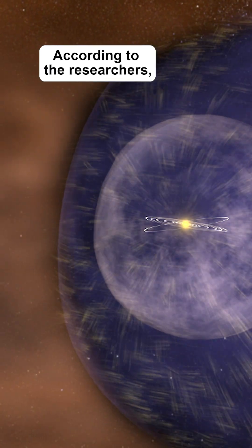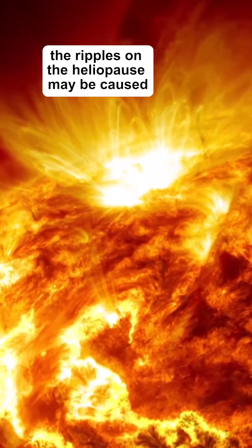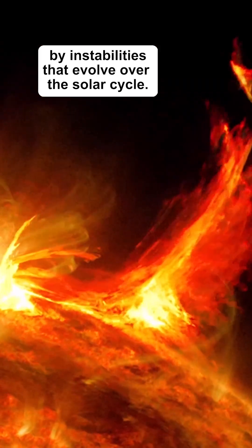According to the researchers, the ripples on the heliopause may be caused by instabilities that evolve over the solar cycle.